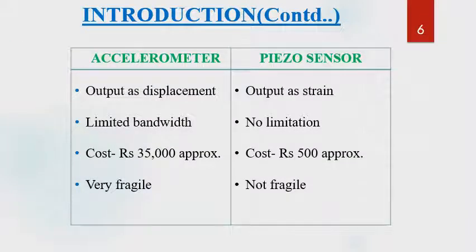Two types of sensors were used during the experiment: accelerometer and piezo sensor. Output is displacement in the case of accelerometer whereas it is strain in the case of piezo sensors. There is a bandwidth limitation for the accelerometer whereas there is no bandwidth limitation for piezo sensor. Accelerometer cost is very high at around 35,000 rupees whereas the cost of piezo sensor is just 500 rupees. Accelerometers are very fragile whereas piezo sensors are not. We will evaluate the effectiveness of piezo as a sensor compared to the high-cost accelerometer in modal analysis.